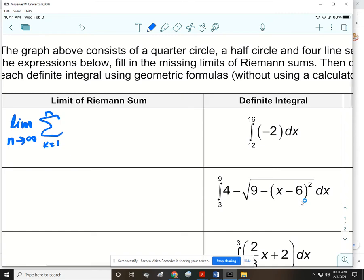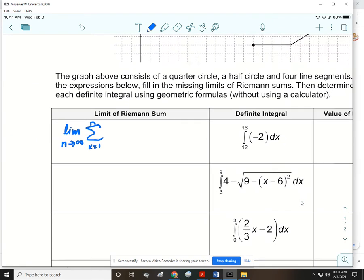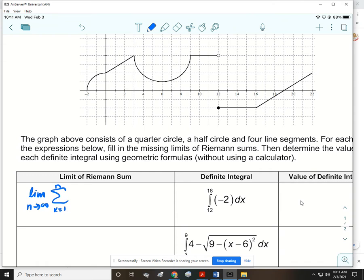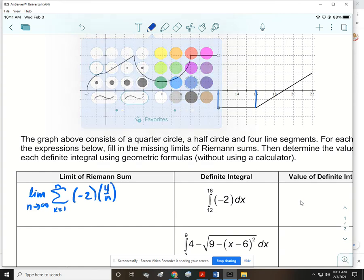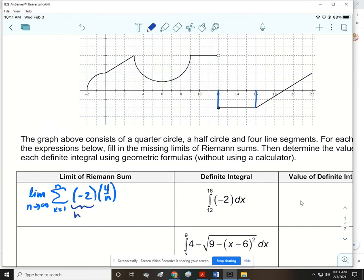So we have the limit as n approaches infinity of the summation of k equals 1 to n. Now, this time, our function is just negative 2. So we're looking at the definite integral from 12 to 16. We're looking at this area right here. All right. So it's a horizontal line at negative 2. So all we really have to do is negative 2 times 4 over n. This is your height times your width.